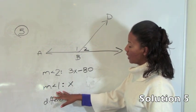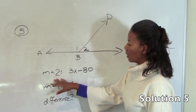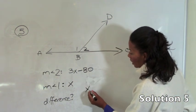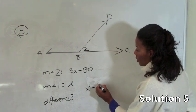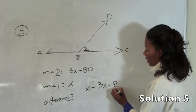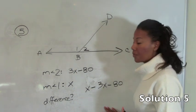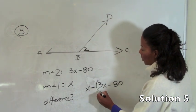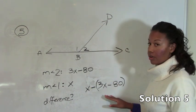Then it asks us for the positive difference between the two and they tell us that the measure of angle 1 is greater than the measure of angle 2. So the positive difference is simply x minus 3x minus 80. You have to be careful here. We are subtracting the entire measure of the entire angle. So this actually has to be in parenthesis because we are subtracting this entire thing. And I will show you why that is important.